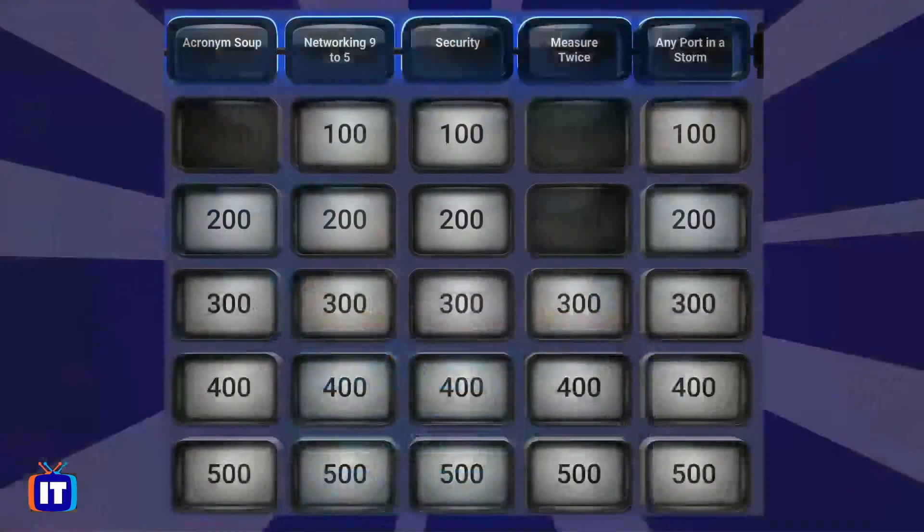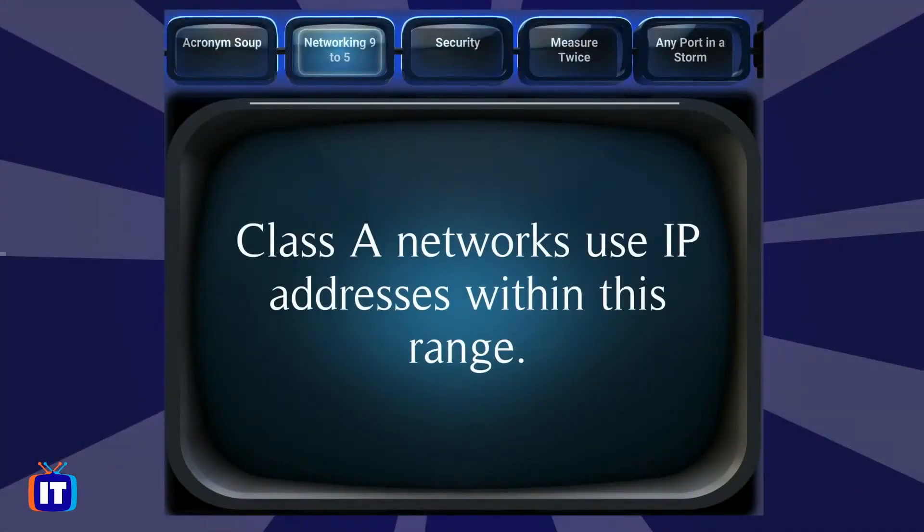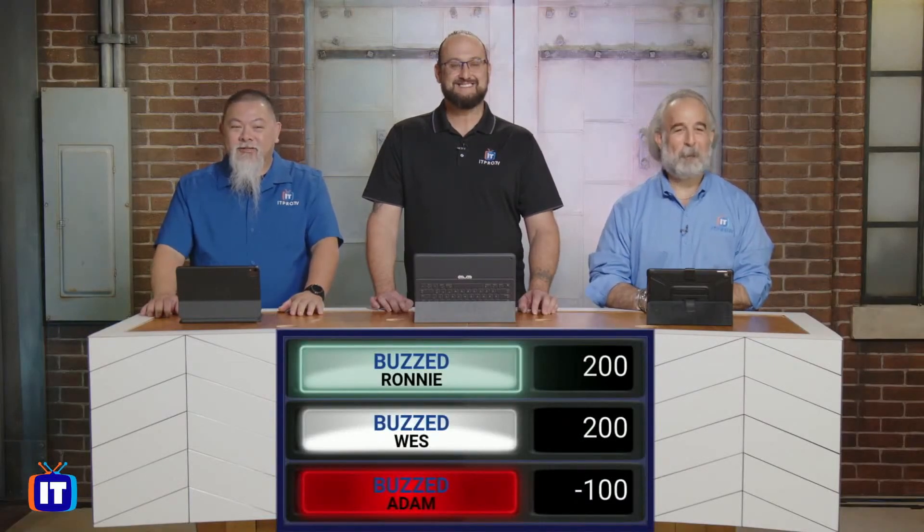Networking 9 to 5 for $100. Class A networks use IP addresses within this range. Adam answers with the 10.0.0.0 range — incorrect. Wes answers 1 to 126 — also incorrect. Ronnie answers 1.0.0.1 through 127.255.255.255 — very close. The correct answer is 0.0.0.0 through 127.255.255.255.